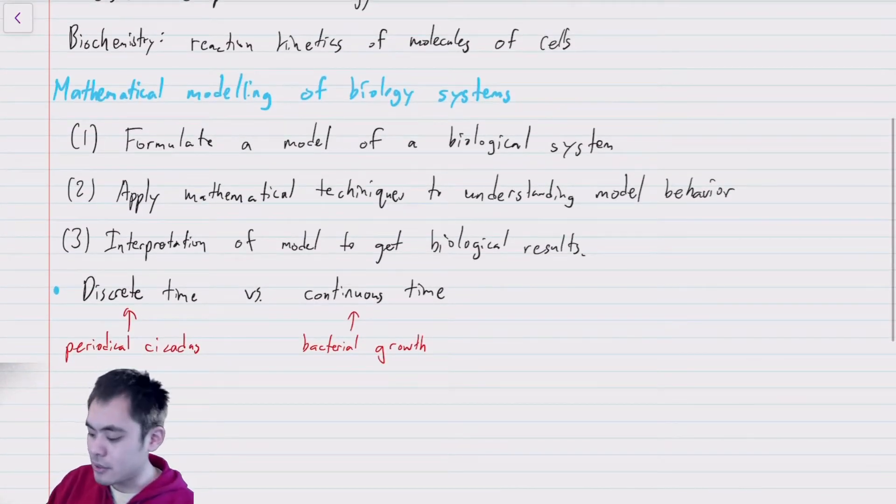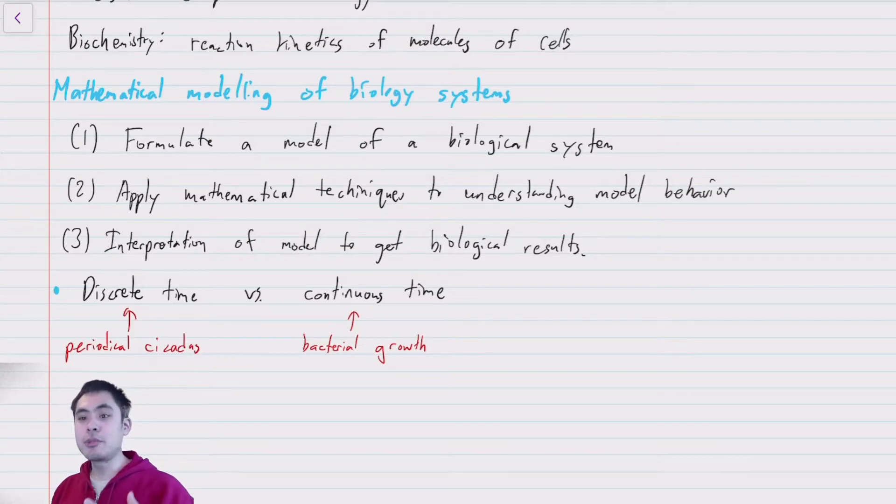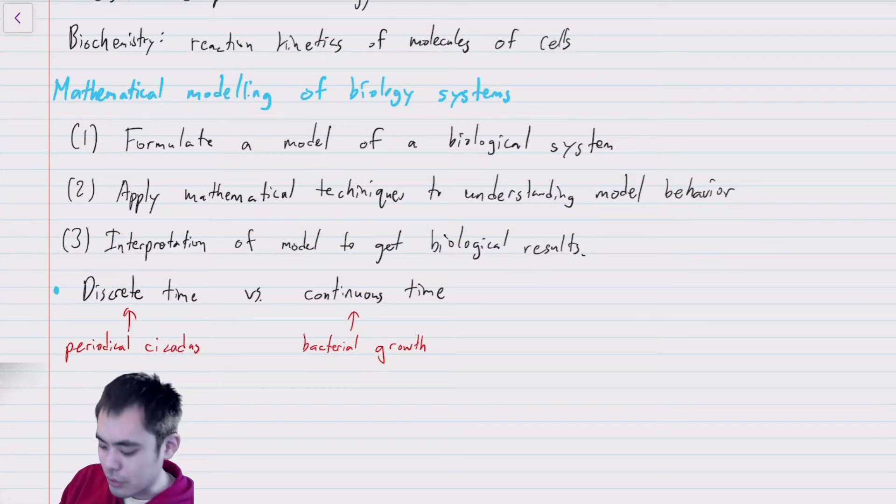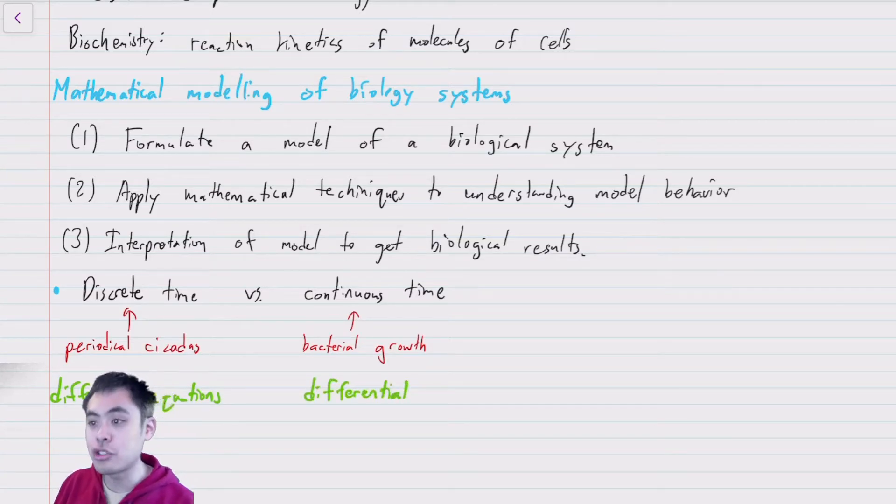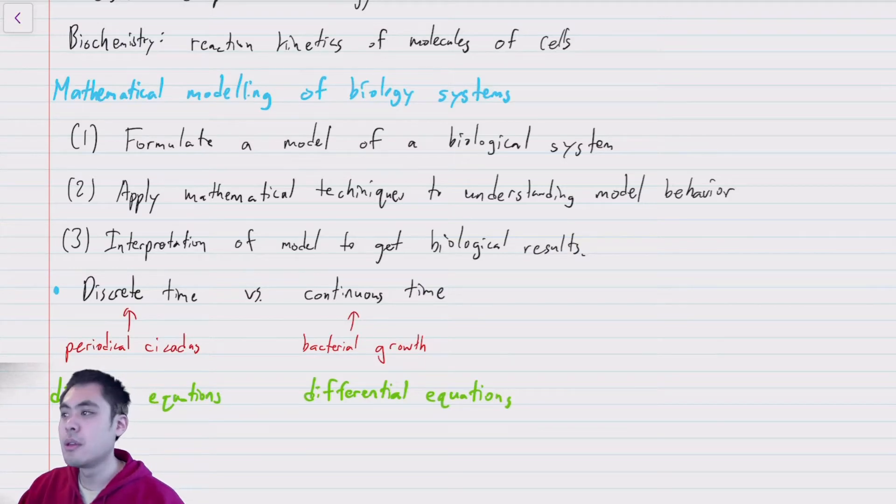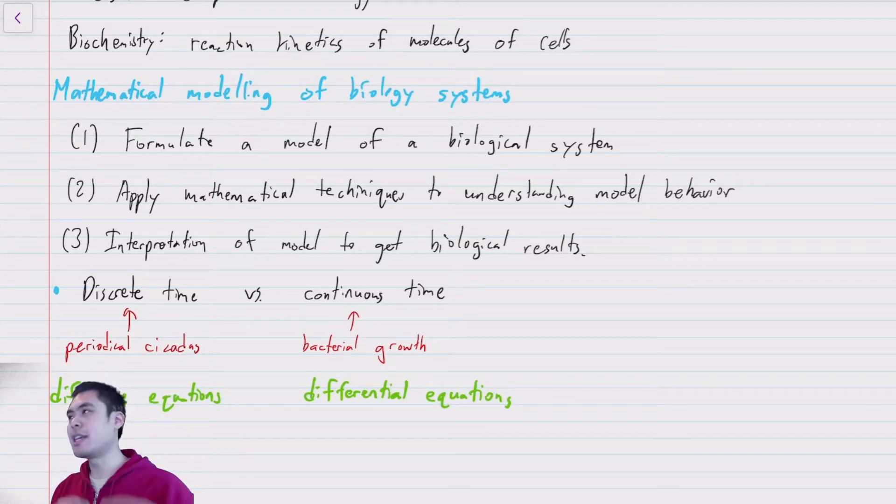Now, this distinction is when we're using the difference between difference equations and differential equations. So here, for discrete time, we're going to use difference equations to model it. And for continuous time, we'll use the ever familiar differential equations that we studied in B44. So in this particular case, I chose examples where it sort of makes sense to use difference equations, because cicadas do have these real discrete generation times, whereas bacteria don't. And so maybe it makes more sense to use differential equations.